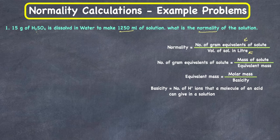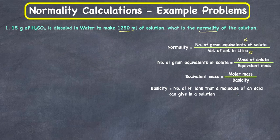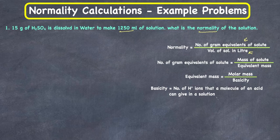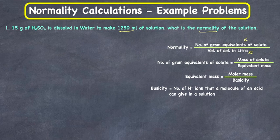In the case of a base, equivalent mass is molar mass over acidity. Basicity is the number of hydrogen ions that a molecule of an acid can give in solution. Acidity is the number of OH⁻ ions that a molecule of a base can give in solution. For oxidizing and reducing agents, it will be the number of electrons exchanged in a reaction. So let's work on this problem.